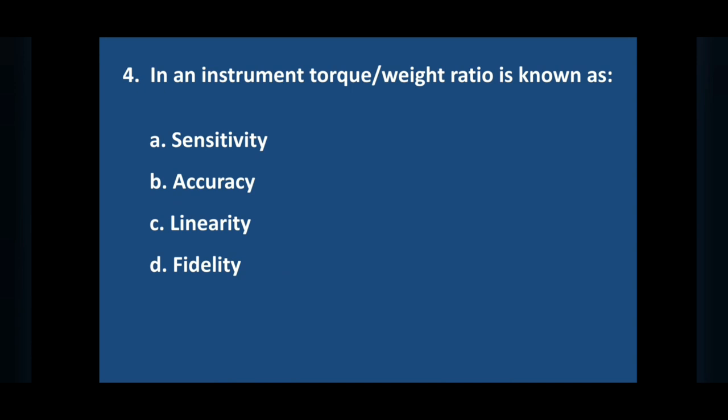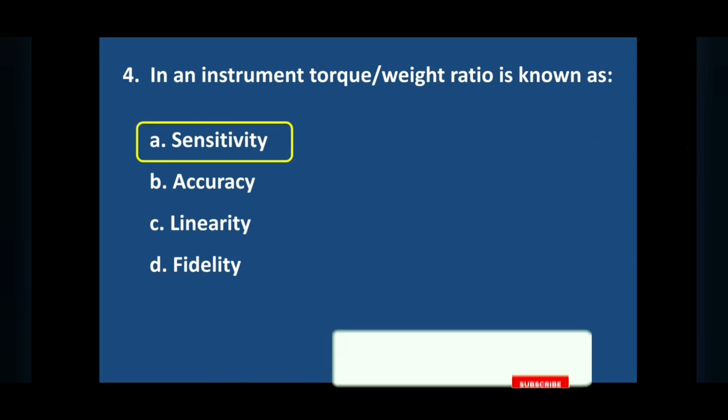Question number four: in an instrument torque by weight ratio is known as. Answer is option A, sensitivity.